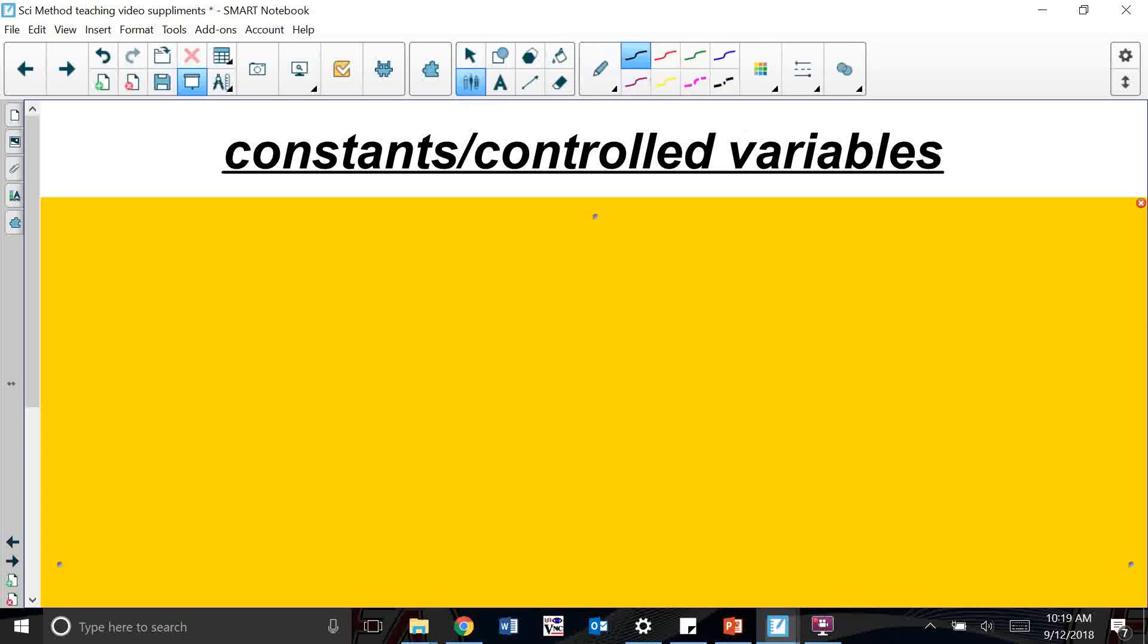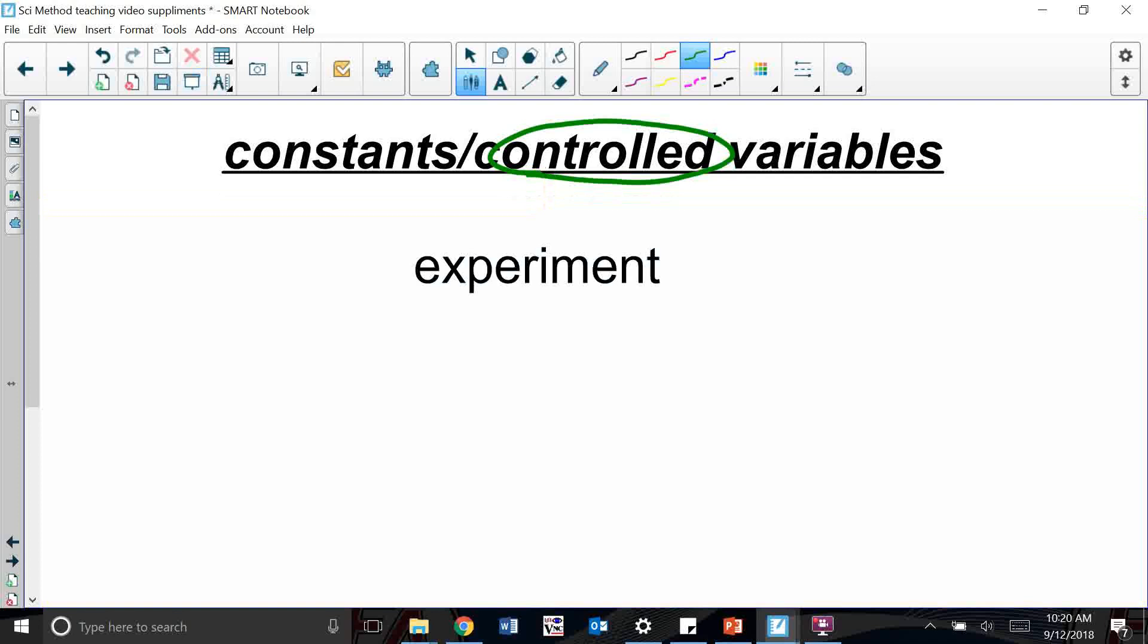Now these are not to be confused with something called a control group. Remember, your control group is a group you don't do anything to. A controlled variable or a controlled constant is something that remains the same.